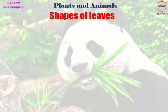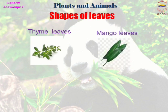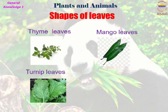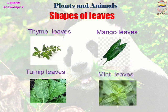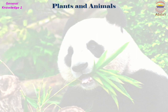Shape of leaves. The edges of thyme leaves are smooth and circular in shape. Mango leaves are leathery, glossy, and deep green in color. Turnip leaves are unsmooth in texture. The mint leaves are tapering to a narrow tip, with texture on the leaf top and a bit of tooth to the edges.